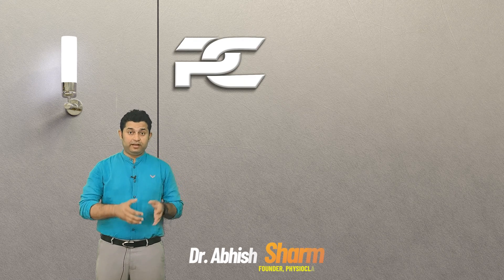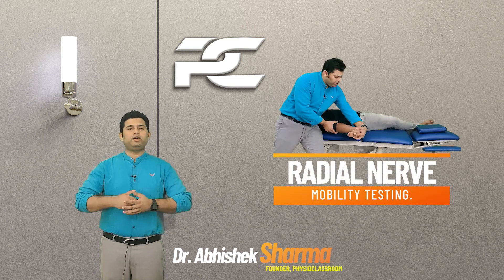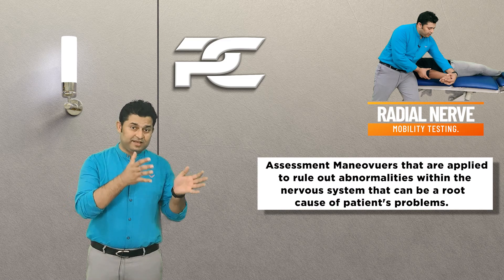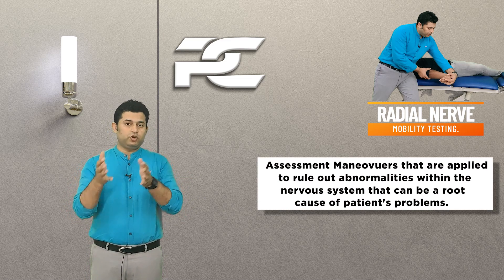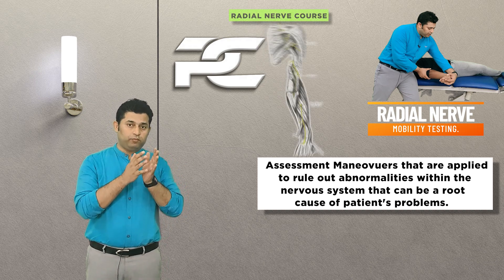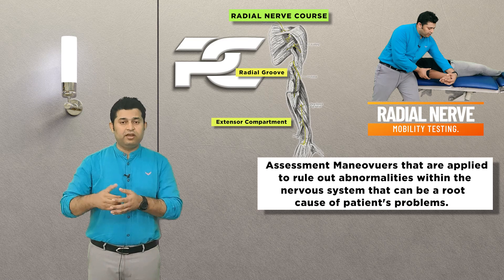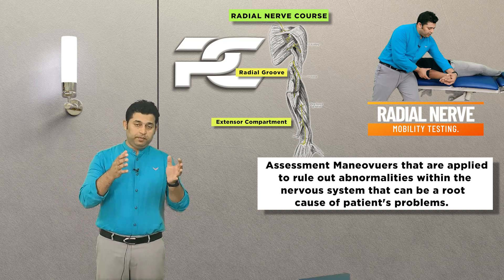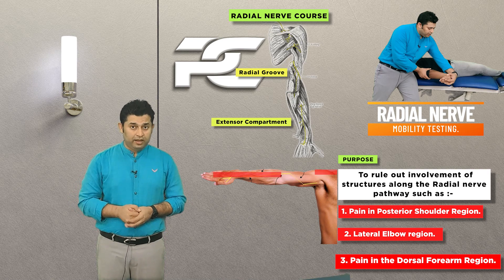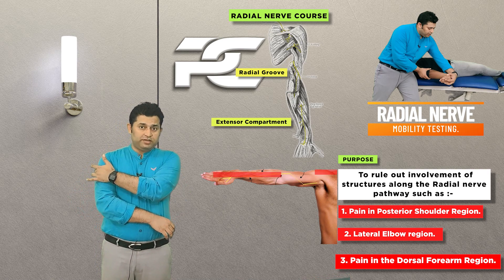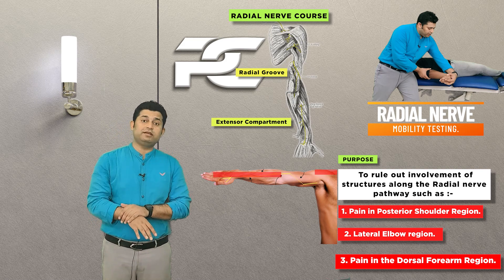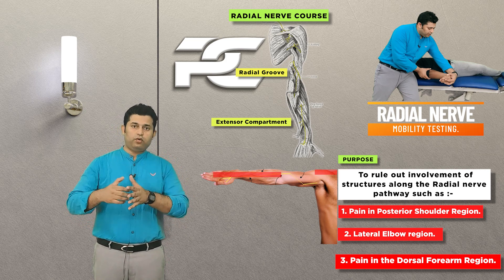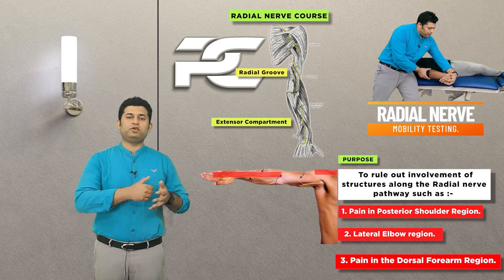Hello everyone, you're watching Physio Classroom channel. In this part of the neurodynamics series we are going to learn about radial nerve mobility testing. When we say nerve mobility testing, it simply means an assessment maneuver that the therapist intends to apply on a patient to find out whether any abnormal mobility — that is tension, compression, or sliding — exists within the radial nerve that can be participating in or causing the patient's problem. The main indications are pain in the posterior shoulder region, lateral elbow region, and the dorsal forearm region.